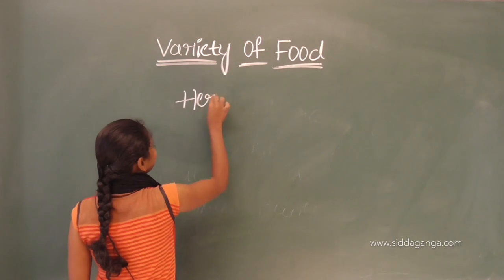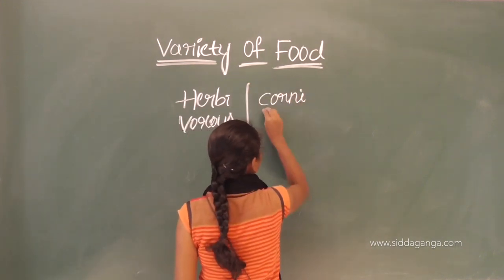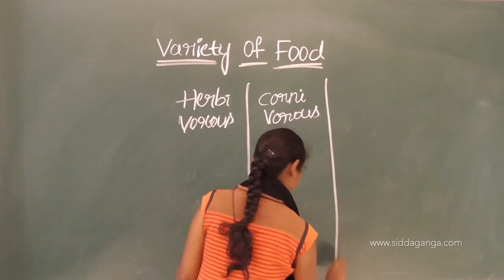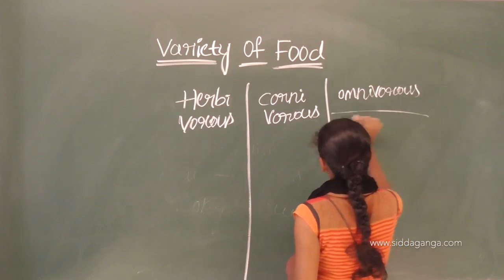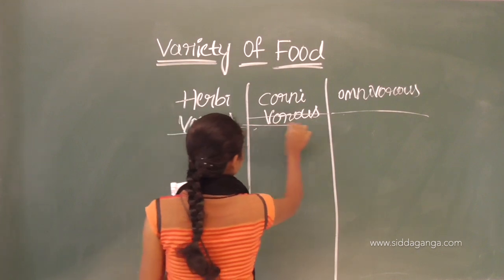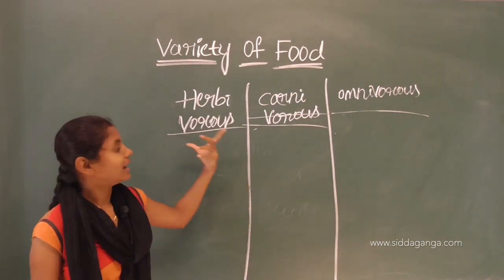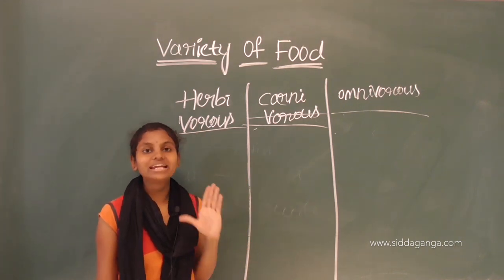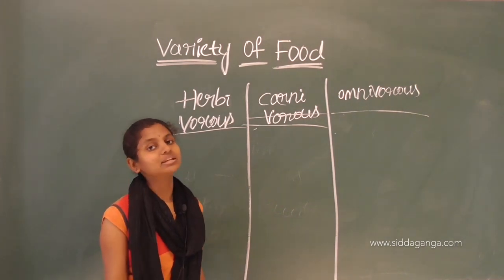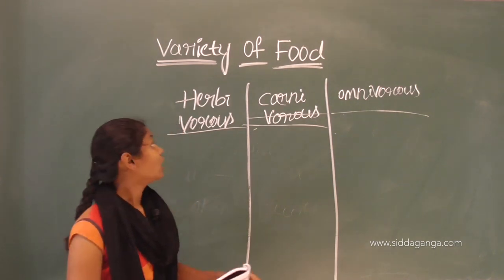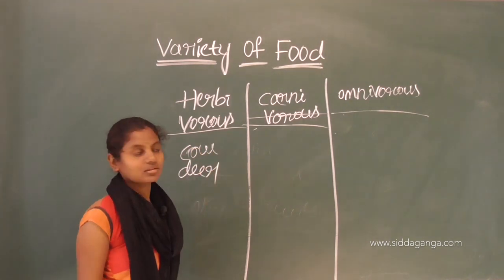Animals which eat both plants and animals and their products are called omnivorous animals. There are three types of animals on earth: herbivorous, carnivorous, and omnivorous. Herbivorous animals are those which eat only grass or depend only on plant sources for their food. Examples are cow, deer, and rabbit.